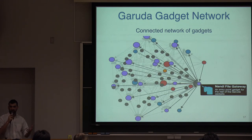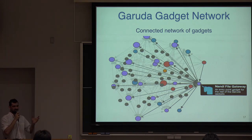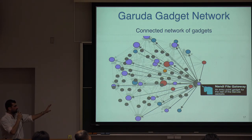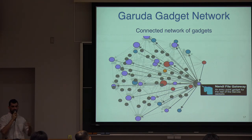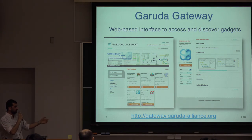One of the gadgets we made is called the social network gadget. We see gadgets as a social thing because one gadget talks to another depending on the data they exchange. By using this gadget you can have an overview and search for the gadget you want for the next step of your task. And this is the Garuda Gateway — you can go there, search for gadgets, download them and use them.